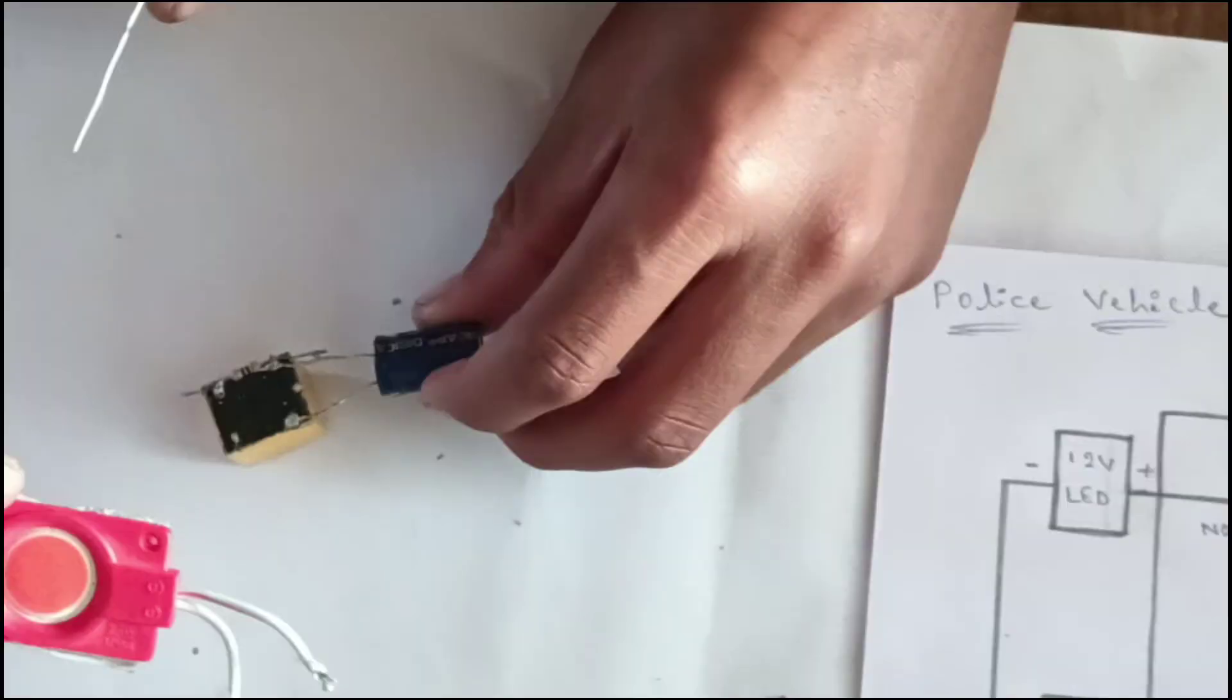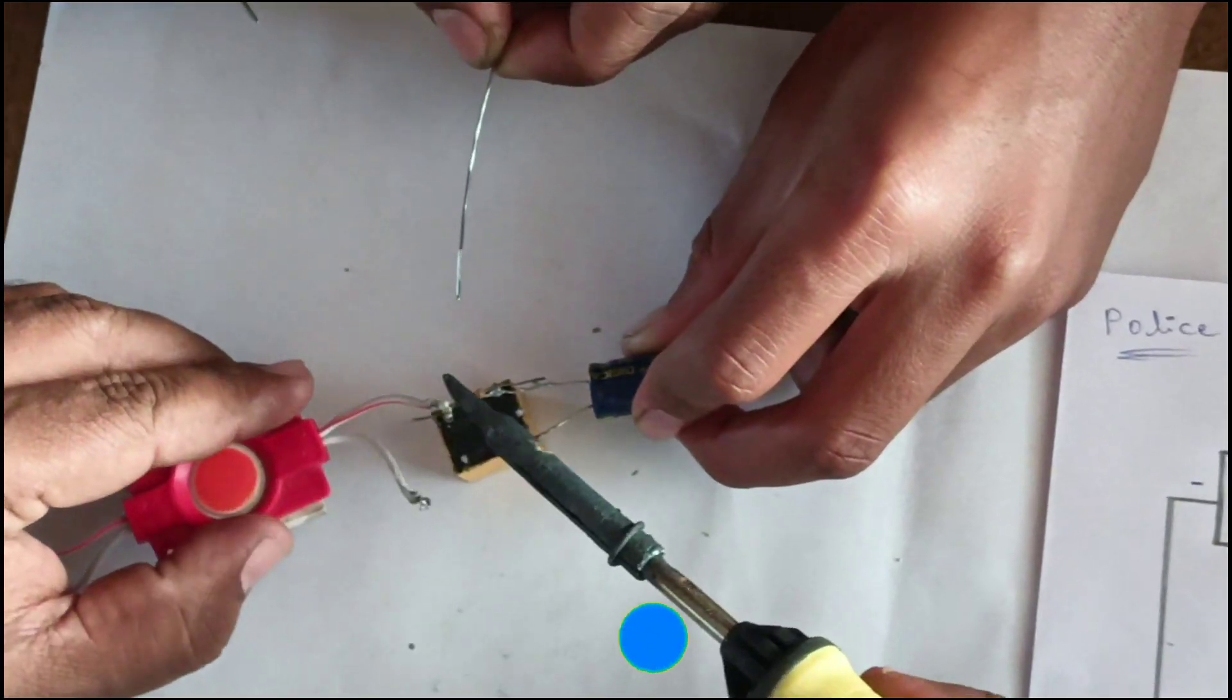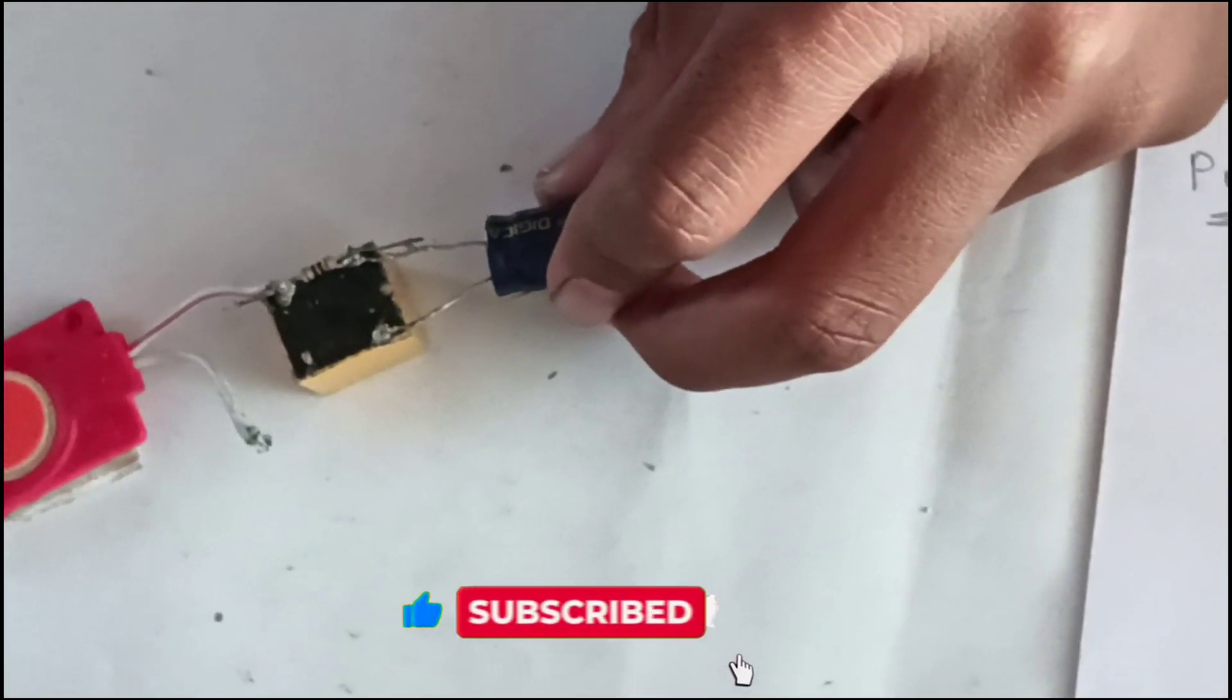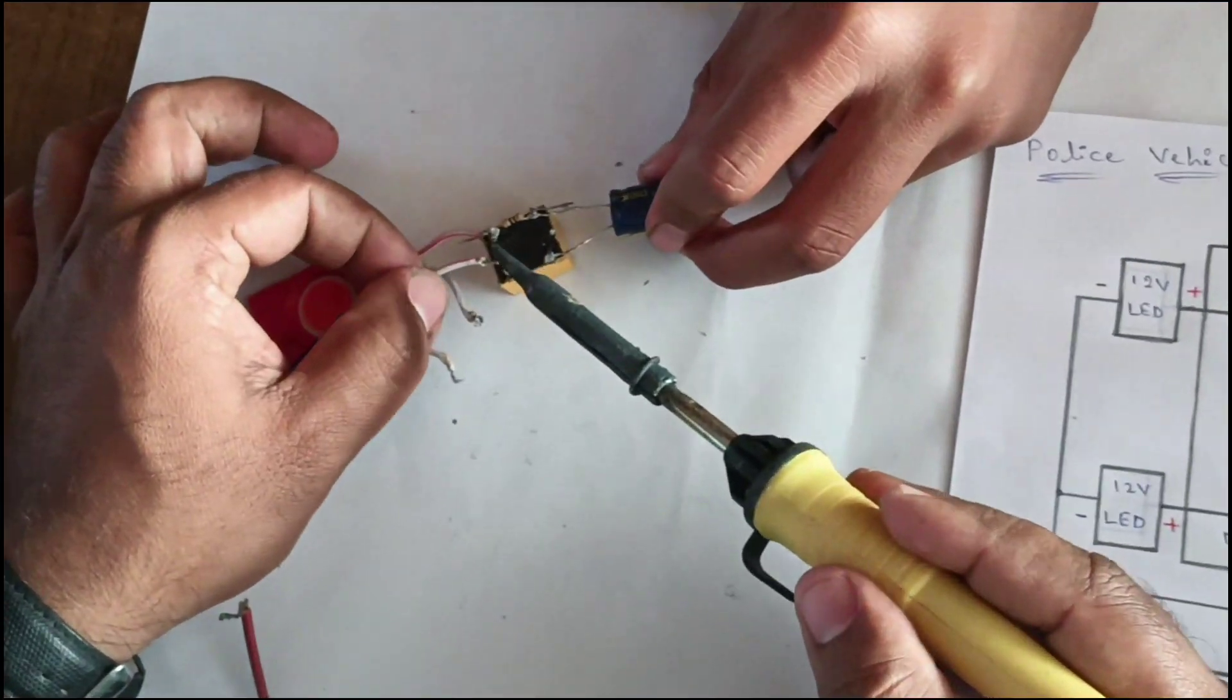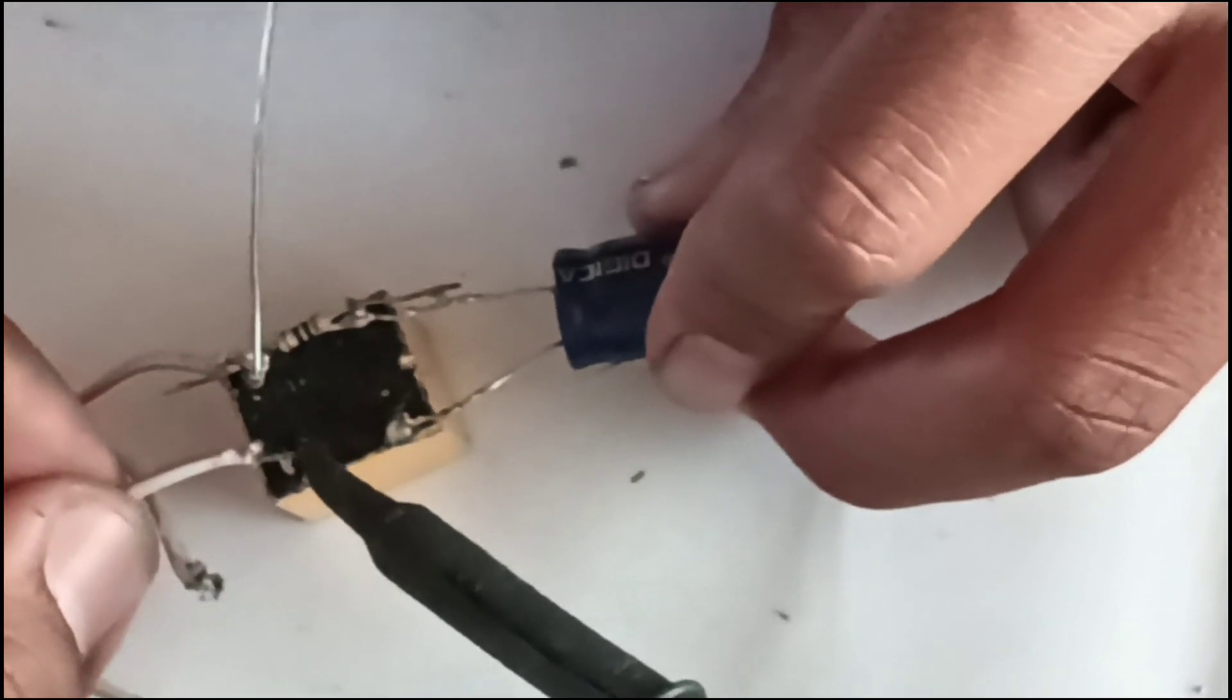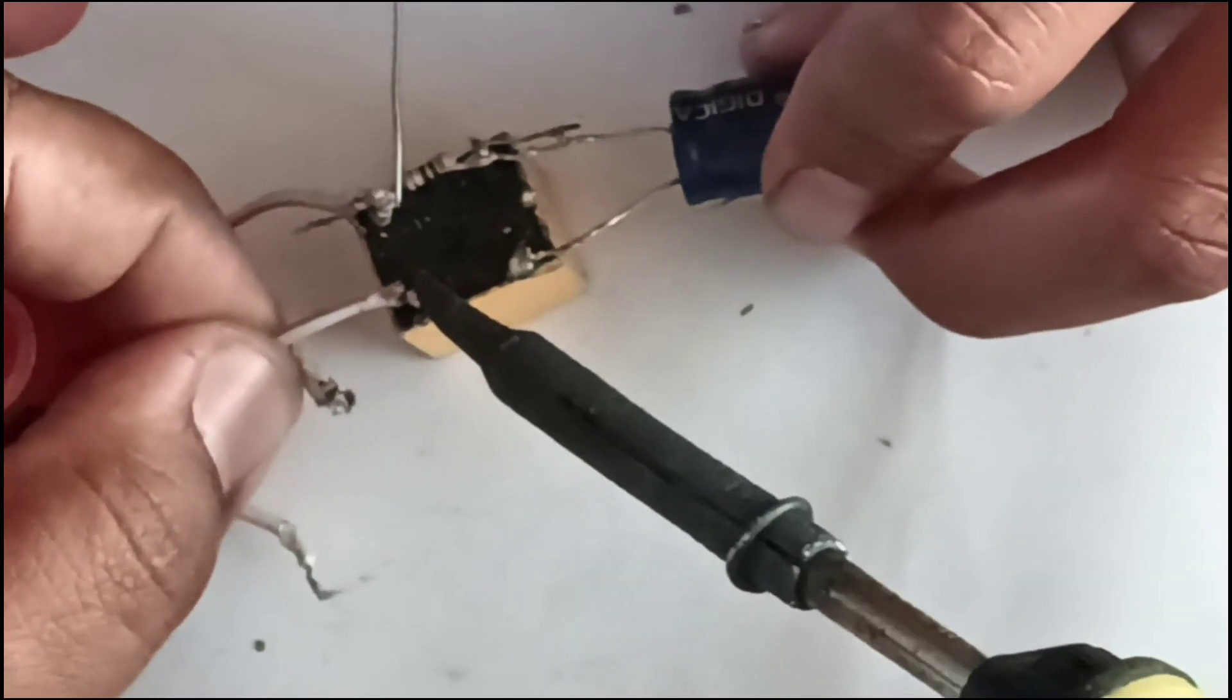Relay 12V LED positive end to NO of the relay. And take another 12V LED, connect to relay NC. Relay connection and working we have shown in earlier videos. You can see it on our channel.